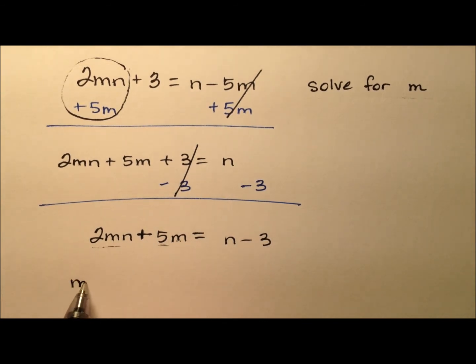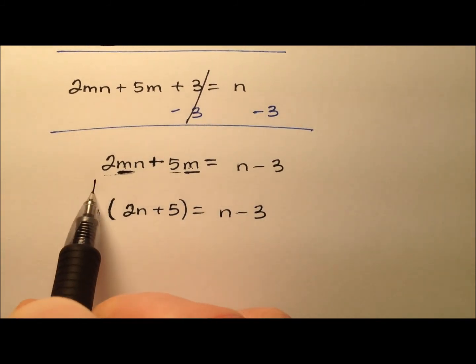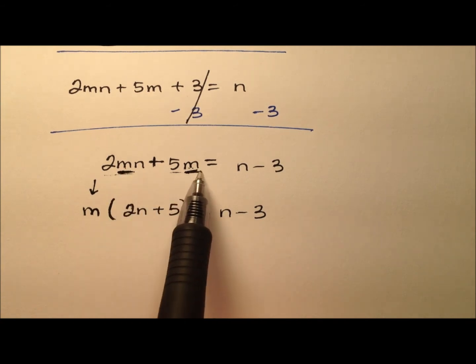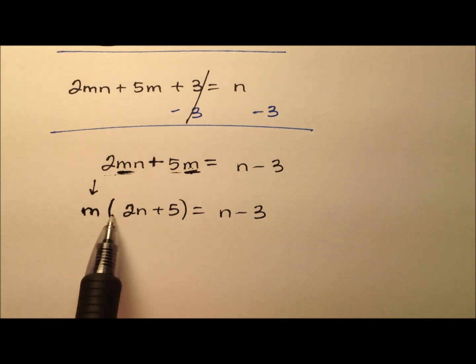So if I take that m out, it'll look like the distributive property. But of course, we won't distribute. And so I divide it out of here and out of here. So I'm left with 2n plus 5. So here's the idea. We're trying to get this m all by itself. So we divided it out of both of these terms. So what I have now is a nice product, m times this expression, 2n plus 5. So why might I do that?